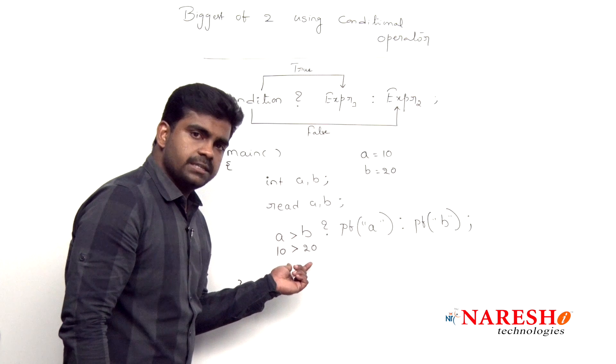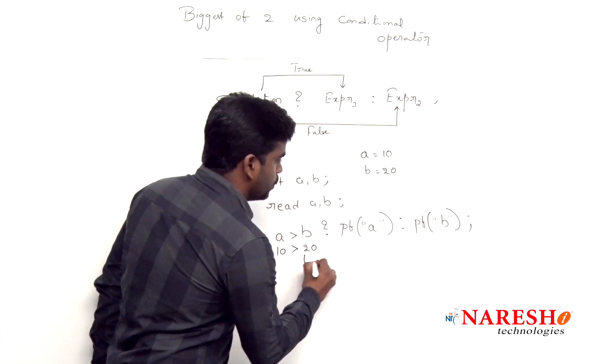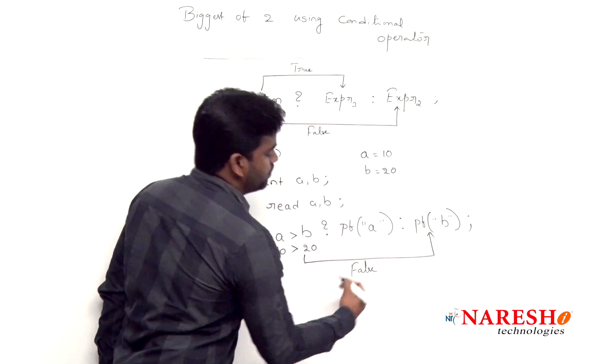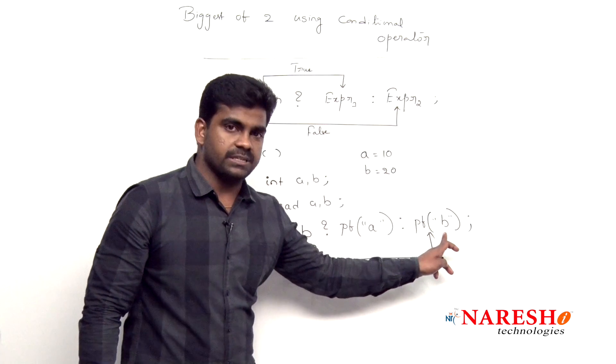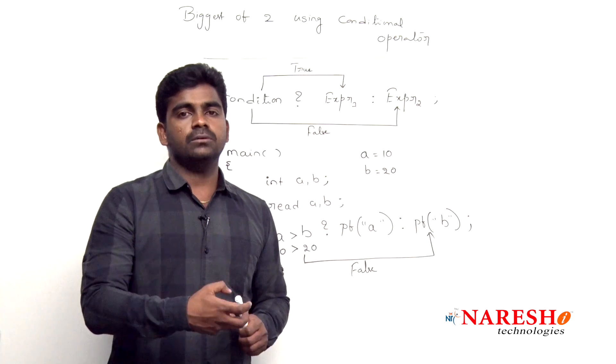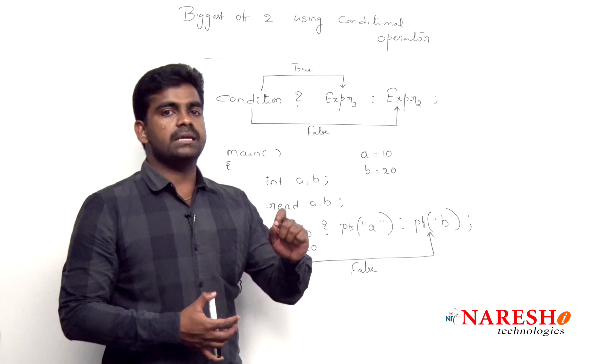So whenever the condition has failed, then it will go and execute the second expression only in case of false. It will execute the second expression. What is that second expression? b value, that b value prints. So b is big will print.